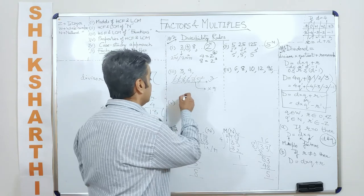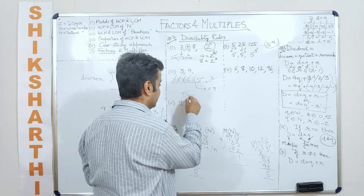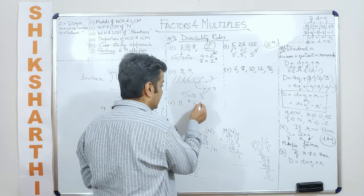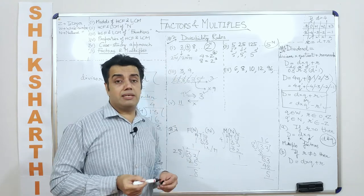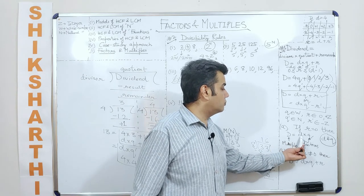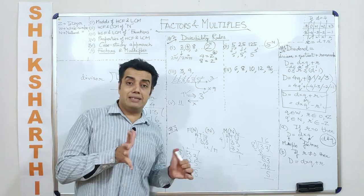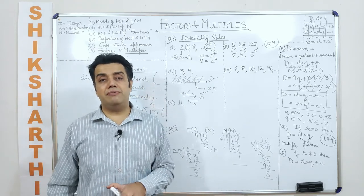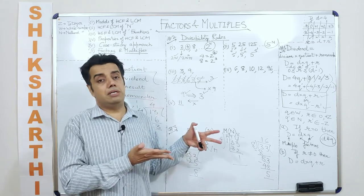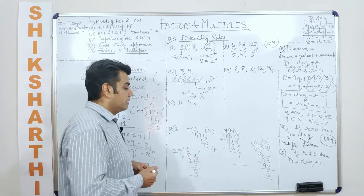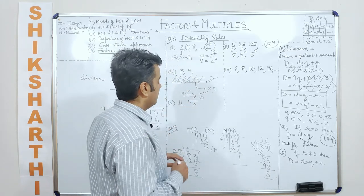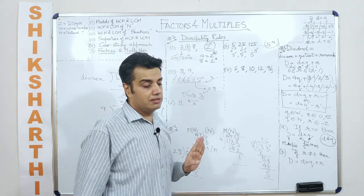A number divisible by 9 will necessarily be divisible by 3, but a number divisible by 3 may not be divisible by 9. The logic: 9 = 3 × 3, so 9 is a multiple of 3. A number divisible by a multiple will always be divisible by its factor, but not necessarily the other way around. The multiple is always greater than the factor.